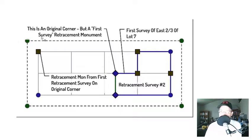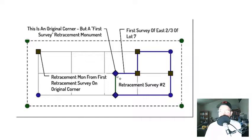Here's what he finds: he finds the four original centerline monuments, the three original block corners, and the retracement monument from retracement survey one that replaced the original block corner. Landon sets three corners that were never marked because the client wants them marked, and then sets two new monuments on the new property line created by the deed — the east two-thirds of lot seven. This survey has a whole grab bag of monument types.